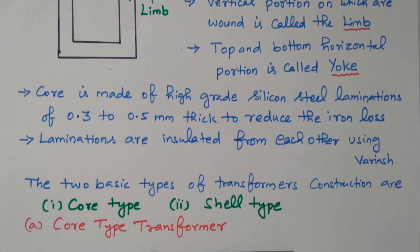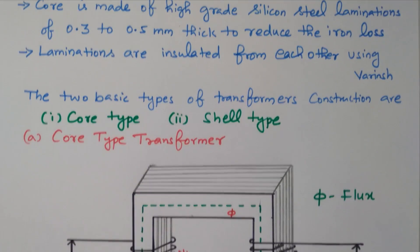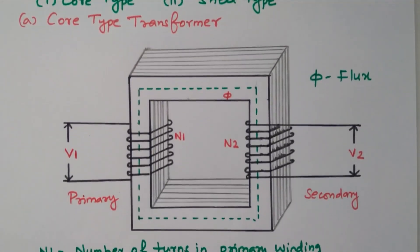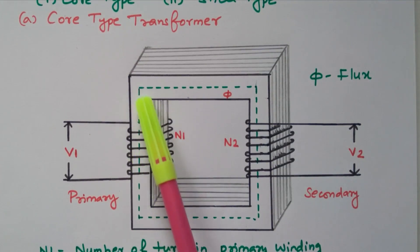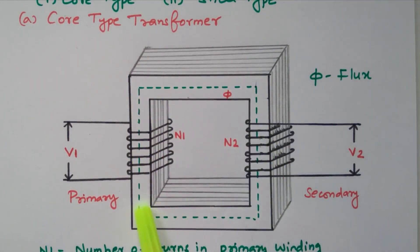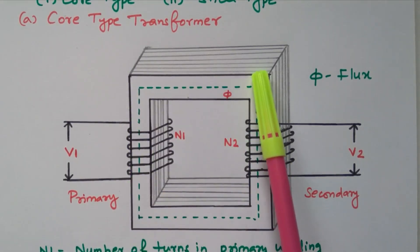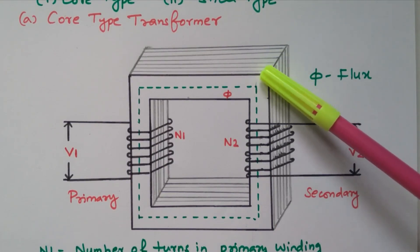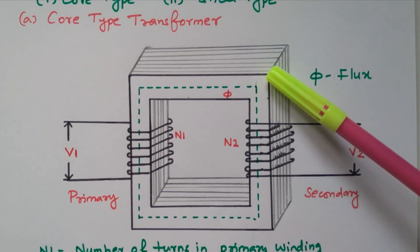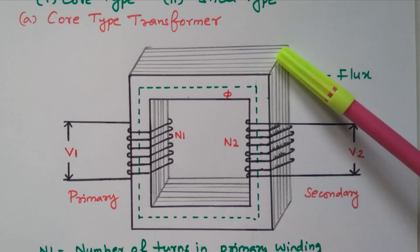There are two types of transformer available: core type and shell type. First we will see the core type transformer. In the core type transformer, this is the iron core made of n number of thin sheets. Each line represents a separate thin sheet; all are compressed together and insulated with varnish.